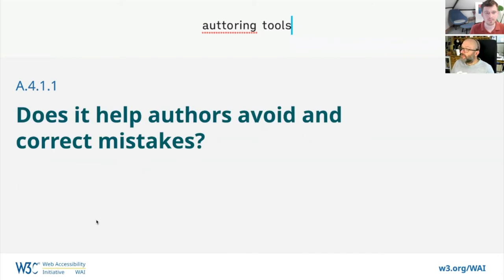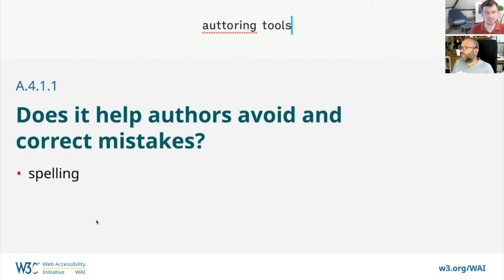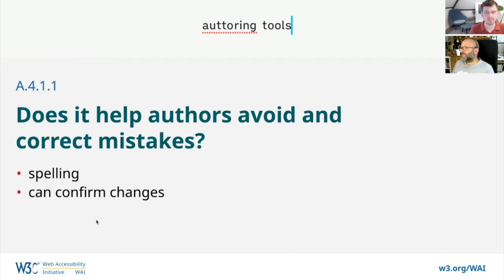Finally, does the tool help authors avoid mistakes? Simple things to ask for: good spelling tools — very important when writing a lot of content online — and confirmation of choices for users. If a user is changing content in their profile or confirming an information change, can they have validation, confirmation of completing a task, or even undo committed changes? These are practical things you can look for when trying to get accessible tools.